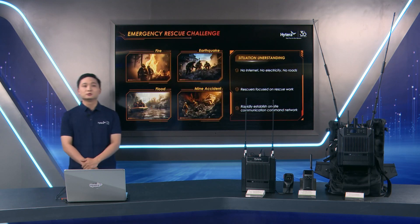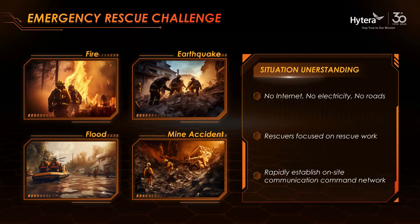As we all know, normally we don't need to worry about communication issues when public network coverage is available — for example, in central big cities like New York in the USA, where we can use WeChat or WhatsApp for text, voice, or video calls. But how do we keep communication when disaster happens — fire, earthquake, flood, or man-made accidents? How do we solve critical communication problems?